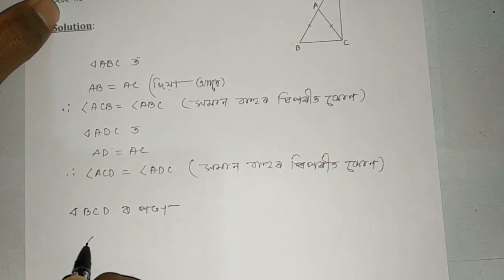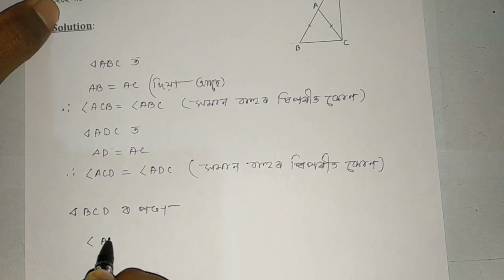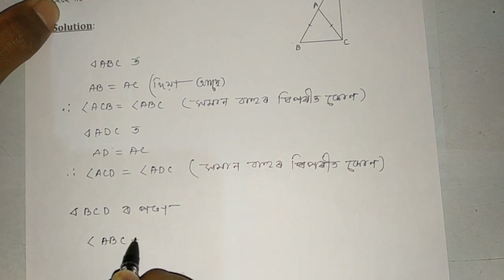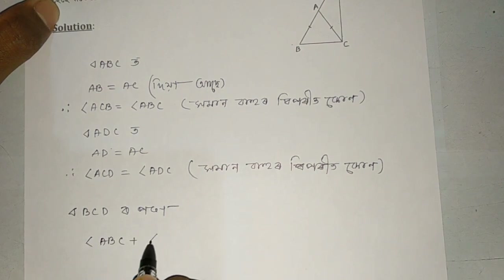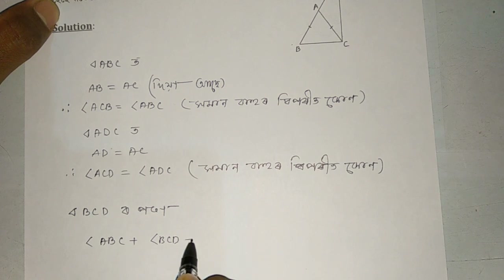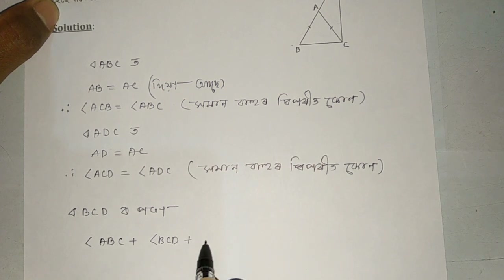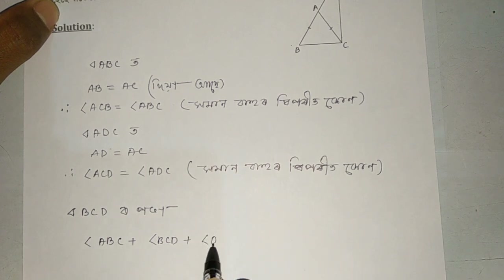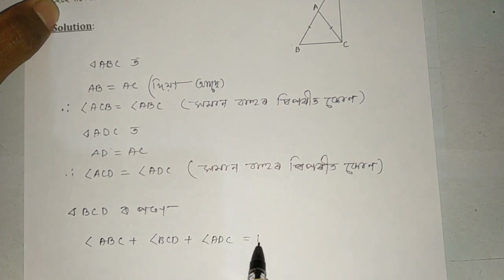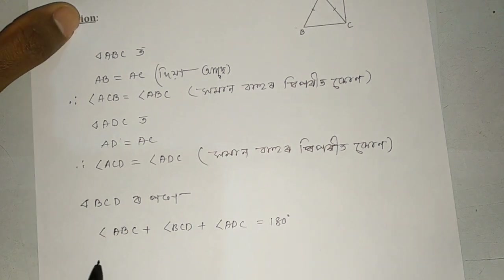The angle ABC plus angle BCD plus angle ADC equals 180 degrees.